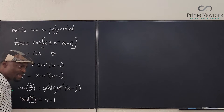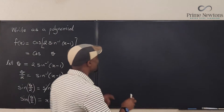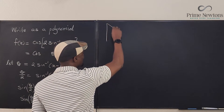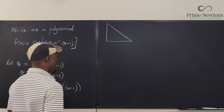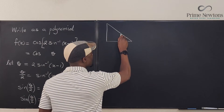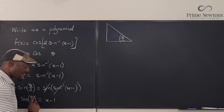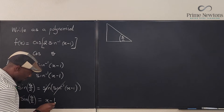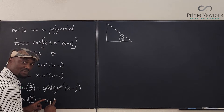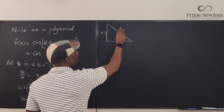Now I have something easy I can deal with, because I can go and make my right triangle. So let's make a right triangle here. We have a right triangle and the angle here is theta over 2. We know that the sine of an angle equals the opposite over hypotenuse. So it looks like this is the same thing as X minus 1 over 1. That's how you read this: the opposite is X minus 1 and the hypotenuse is 1.